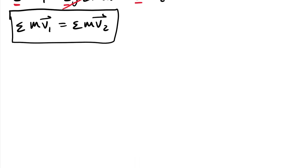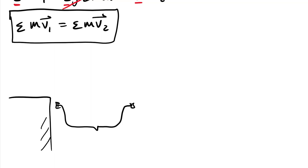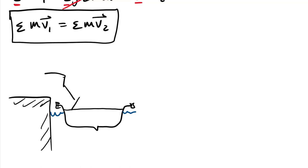To think about the implications, consider that you're on a boat — like a little canoe — coming in to your dock. There's water, a bench seat, and you're going to step out onto the dock. We'll call the boat particle B and you particle A.